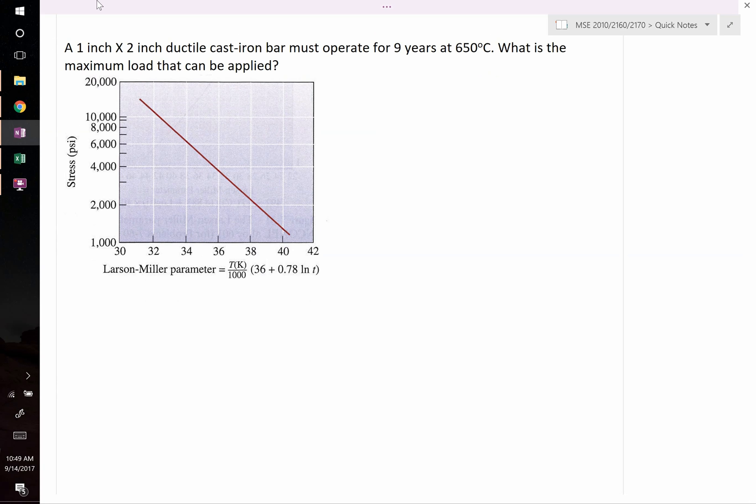Whenever you have a question like this, Larson Miller parameter diagrams can be very useful. The Larson Miller parameter tells you as a function of stress that can be applied if you want to avoid rupture for given conditions such as temperature T and time t. In this case we're given the temperature, the time, the dimensions of the sample, and we're asked to figure out the load.